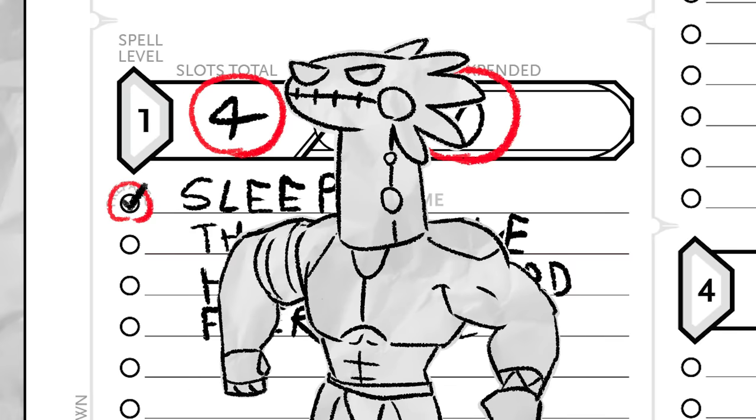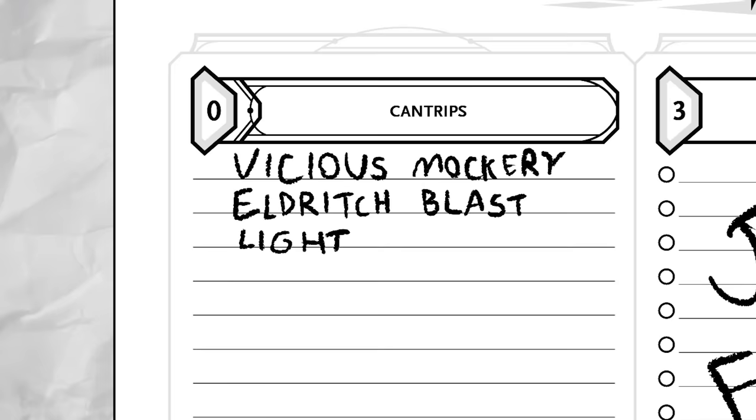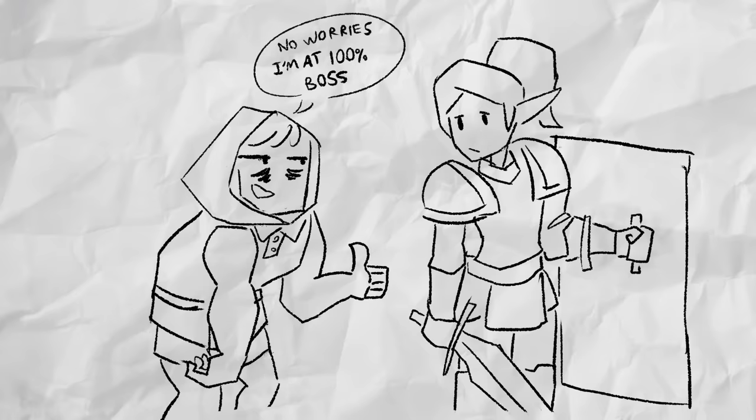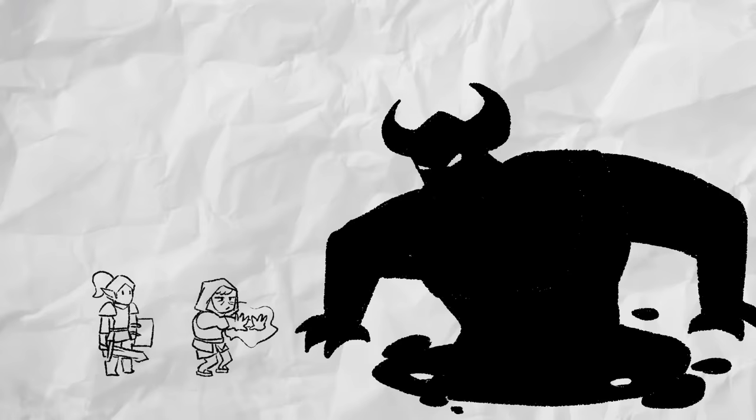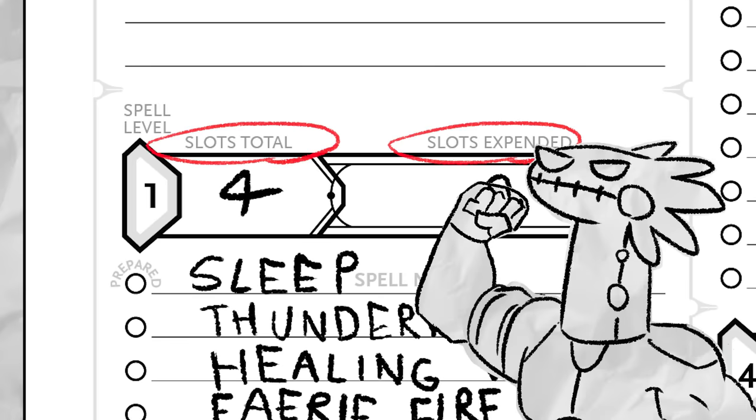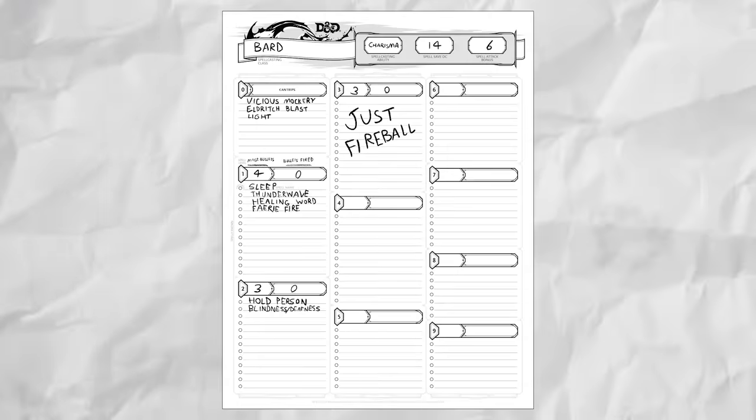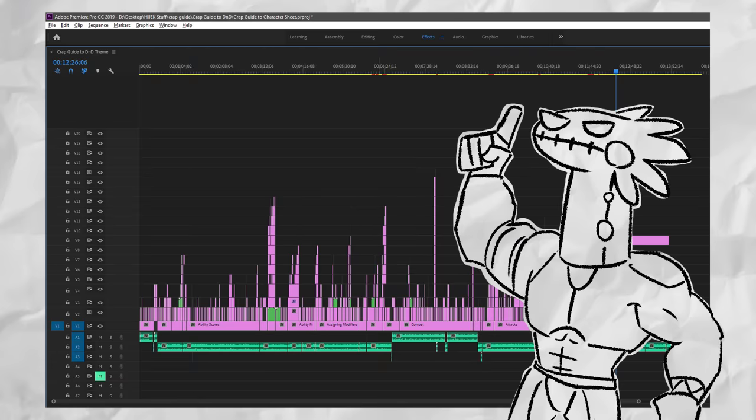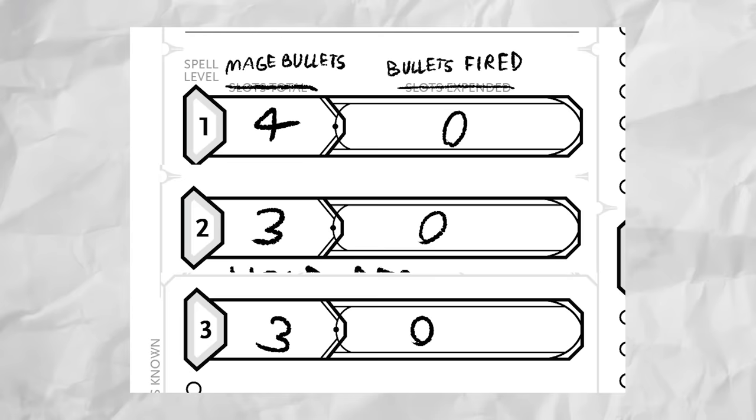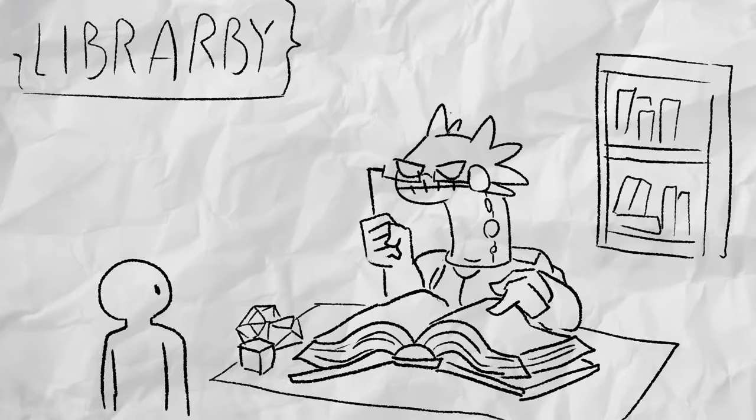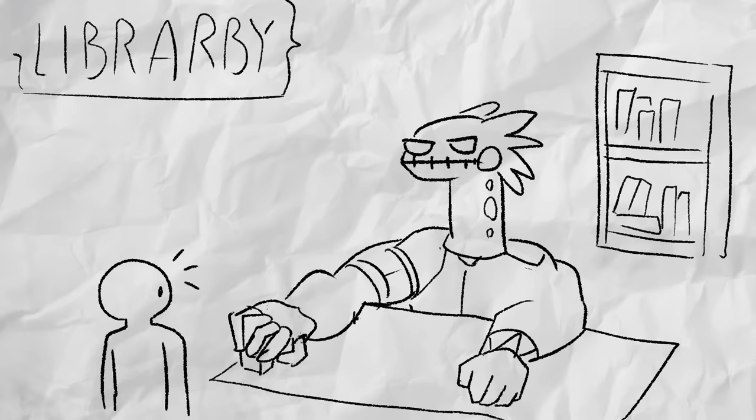The weakest level of spells are called cantrips, or sometimes level zero, and they can be cast as many times a day as you want. First level spells and upwards, however, require a resource called spell slots to be cast. How many spell slots you have per spell level and how you recover them is determined by your specific class and level. And if the name spell slot makes things too confusing for you, you can use my personal preferred name for them: Mage Bullets. And keep track of your goddamn slots! Because if you don't, the DM has full rights to eat your dice.